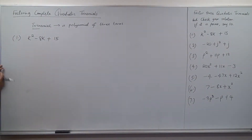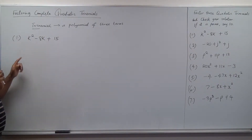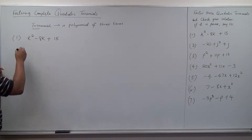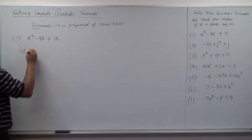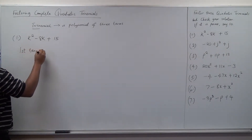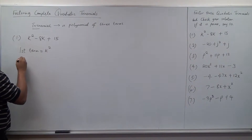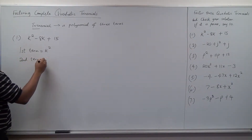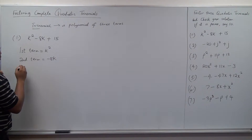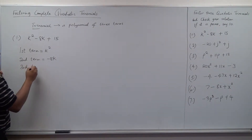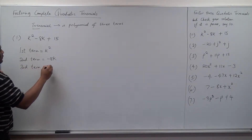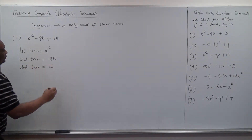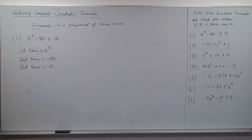After I finish, you can write. The first thing we want to do is we have to find the terms. So we say the first term is k squared, the second term is negative 8k, and the third term is 15. That's the first thing you want to do.